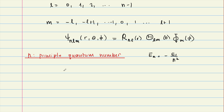If you remember the definition of a bound state — if your energies are less than the limit of the potential as the potential goes to infinity, we call these bound states. Otherwise, we call them scattering states.